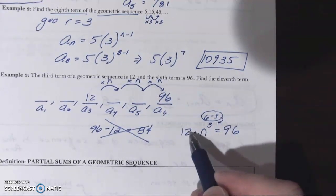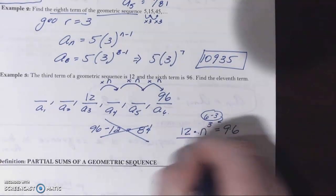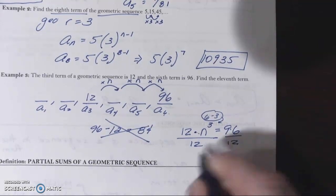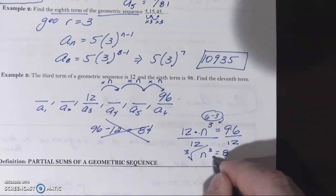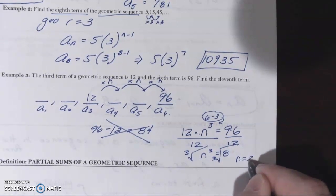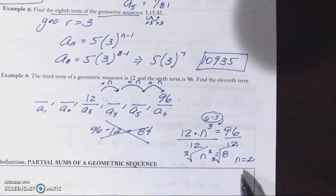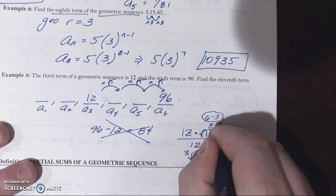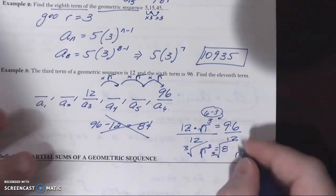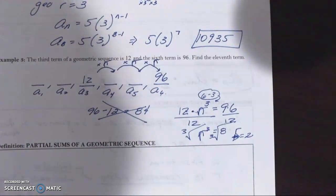So 12 is kind of our initial term and I'm multiplying the same number three times and I should end up with 96. Let's just solve for n then. n to the third equals eight. We take the cube root of both sides and we find that our n value, probably the wrong letter to use to be completely honest. We probably should be using r here, because we're going to find the common ratio as long as we do it right. We'll get r equals two.